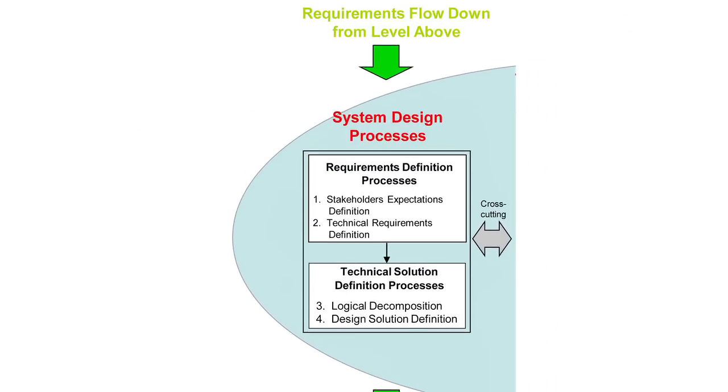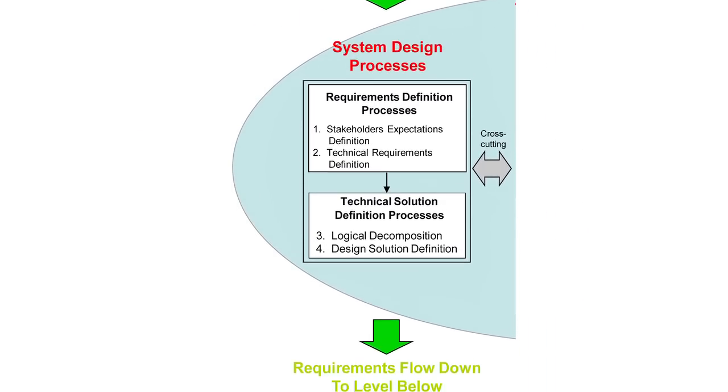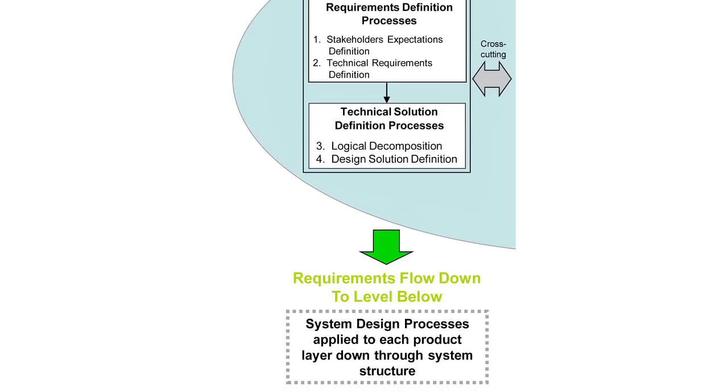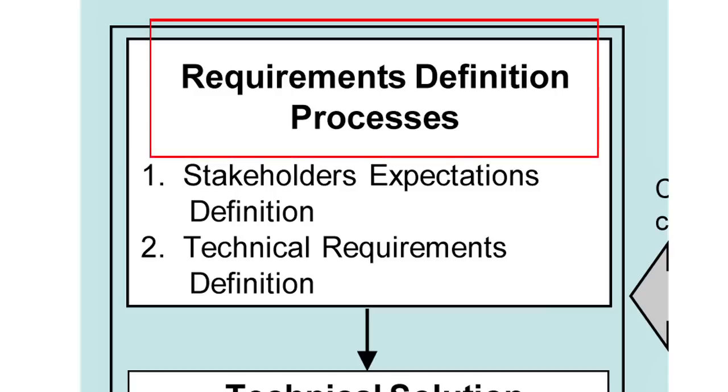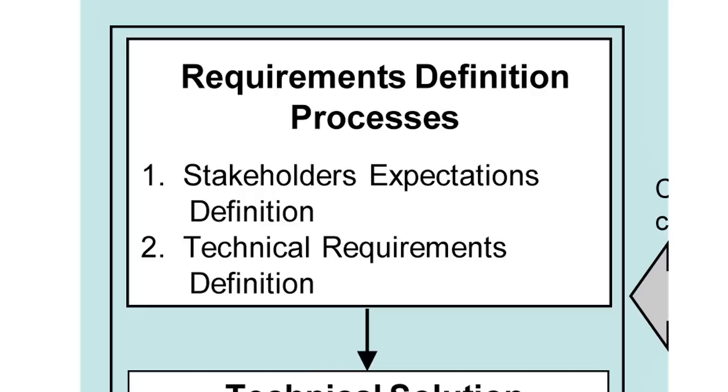The system design process on the left-hand side of this engine describes how we take that high-level goal and break it down into lower and lower-level requirements, to make sure you really understand how each small piece of the satellite has to operate, what it needs to do, and how it needs to perform.